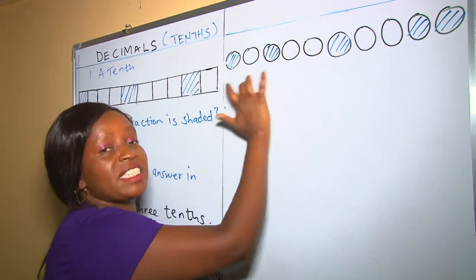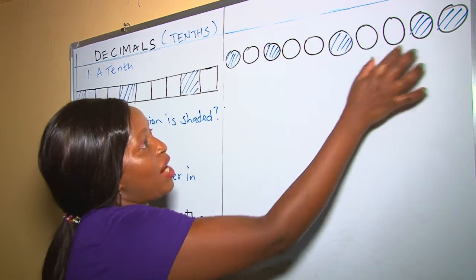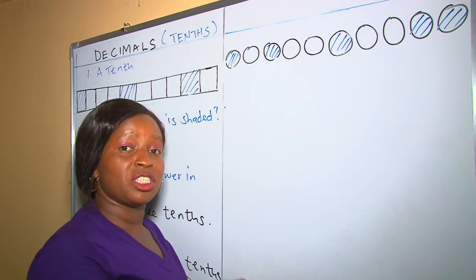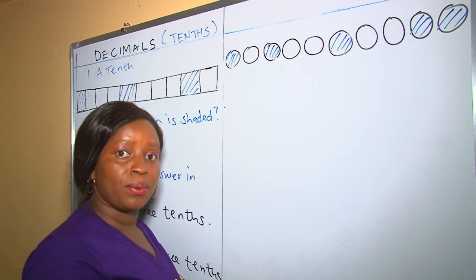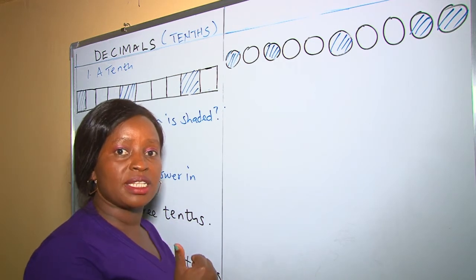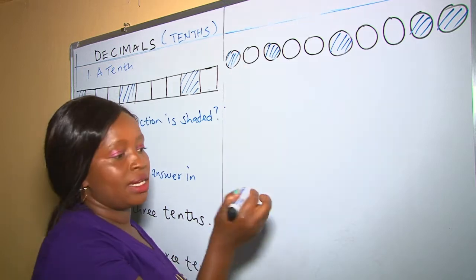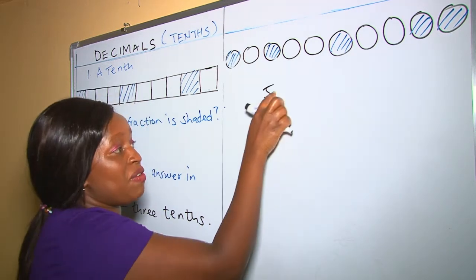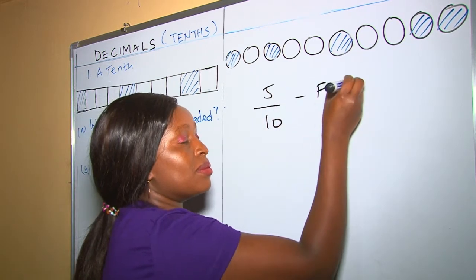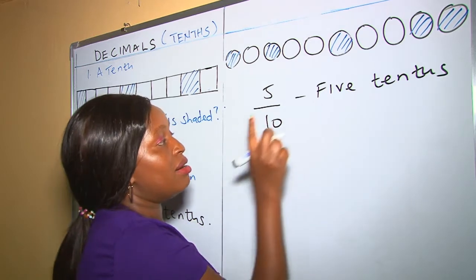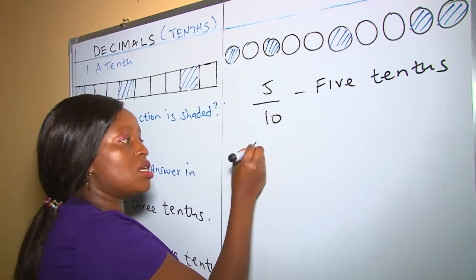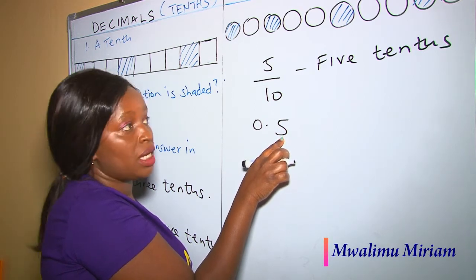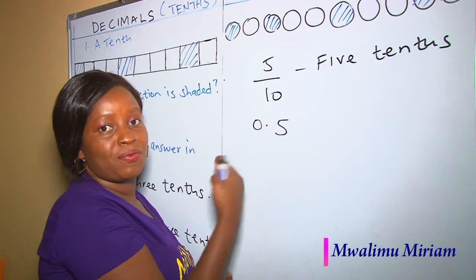In this example, we are given 10 objects. Out of the 10 objects, 5 are shaded — that is 1, 2, 3, 4, 5. Five are shaded and 5 are unshaded. For us to write the number of shaded objects as a decimal, the first step is that we write the number of shaded objects as a fraction. Therefore, there are 5 that are shaded out of 10. After writing our fraction, we write our fraction in words — that is, 5 over 10 in words is 5 tenths. Therefore, to write it as a decimal, it's going to be 0.5, because after the decimal point, the place value is tenths.